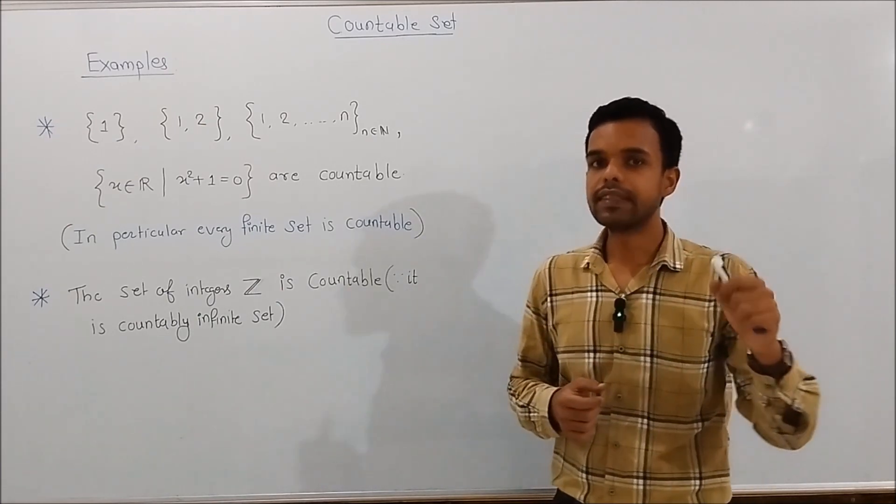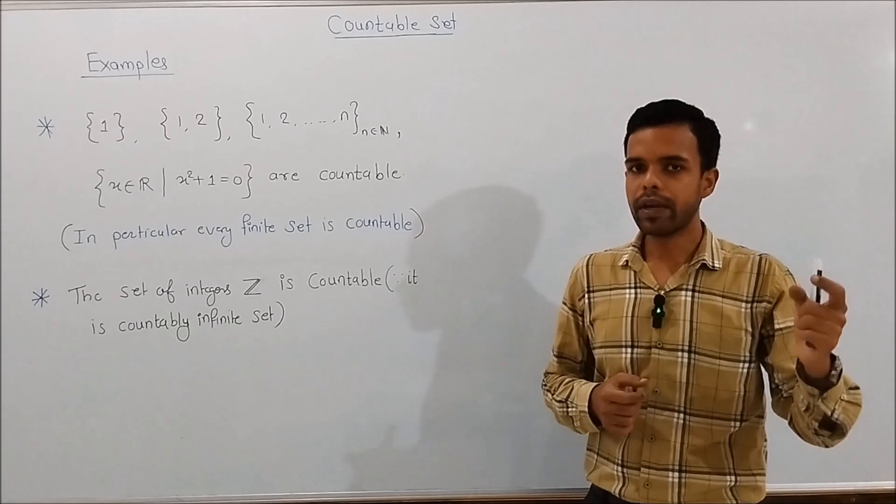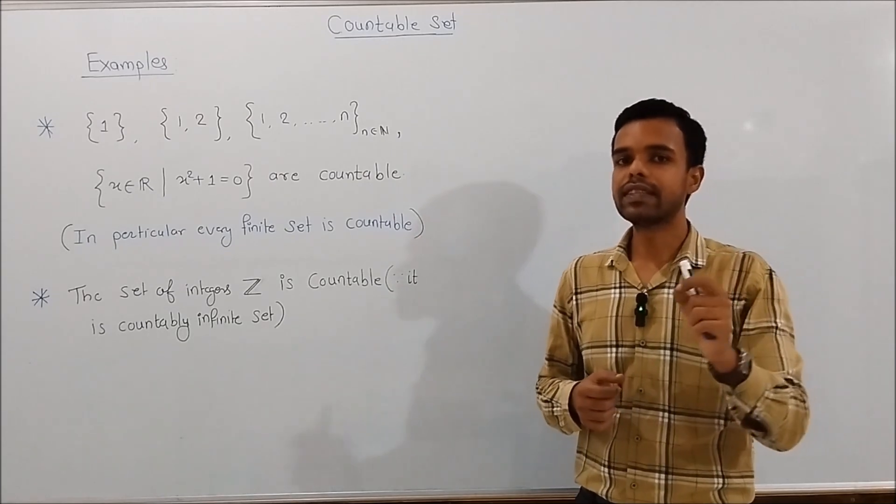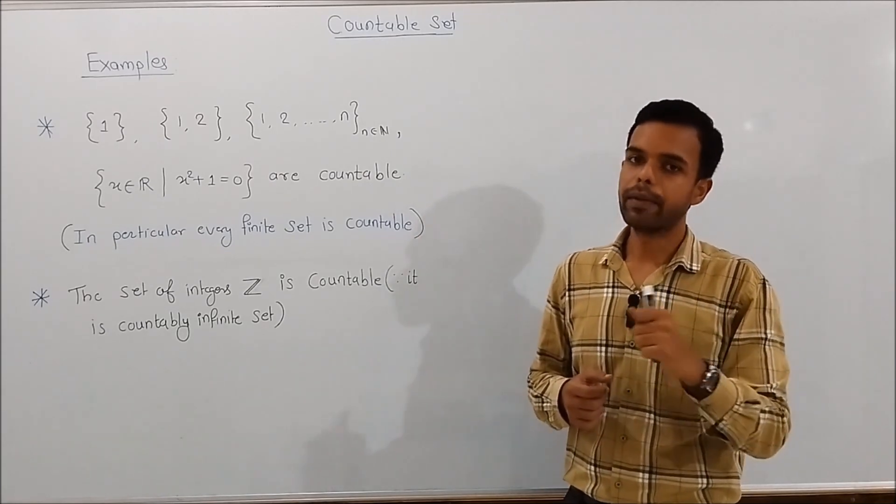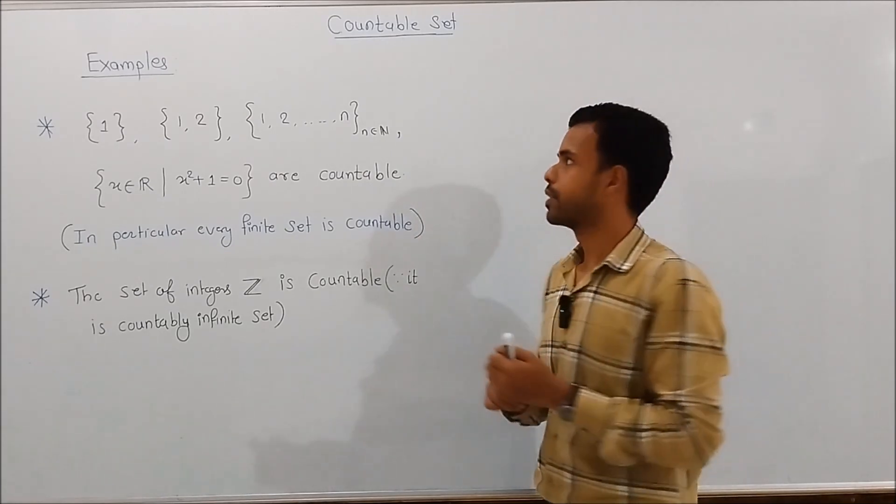A set S is said to be countable if it is either finite or countably infinite.